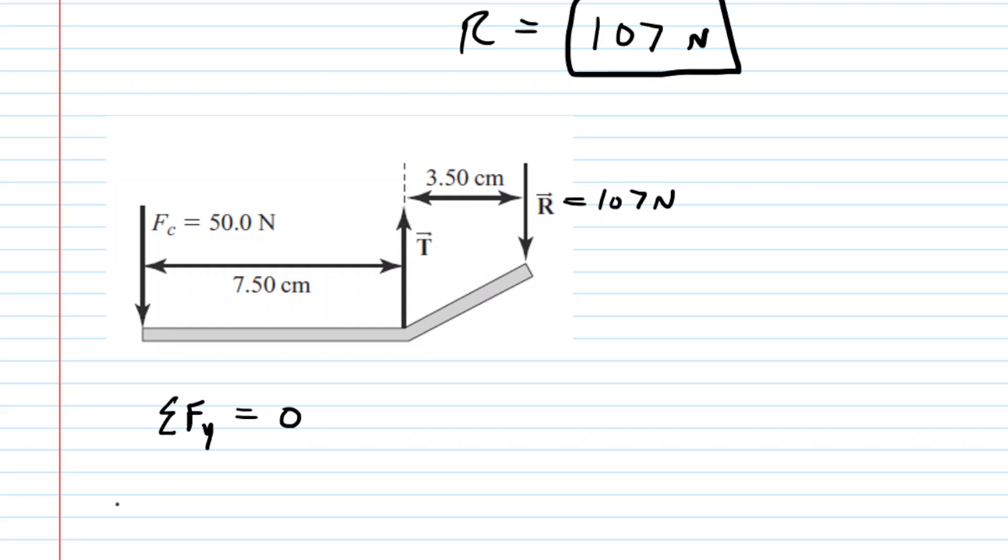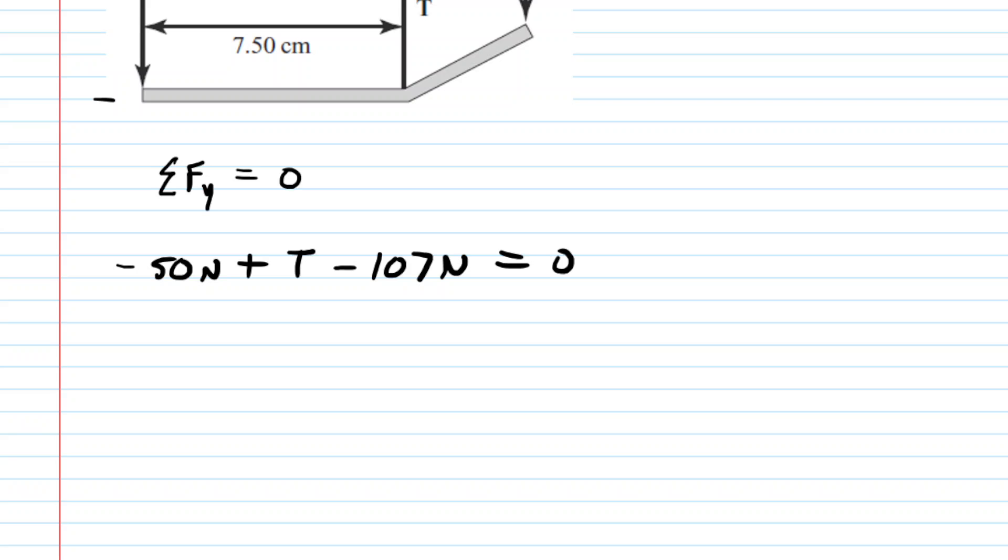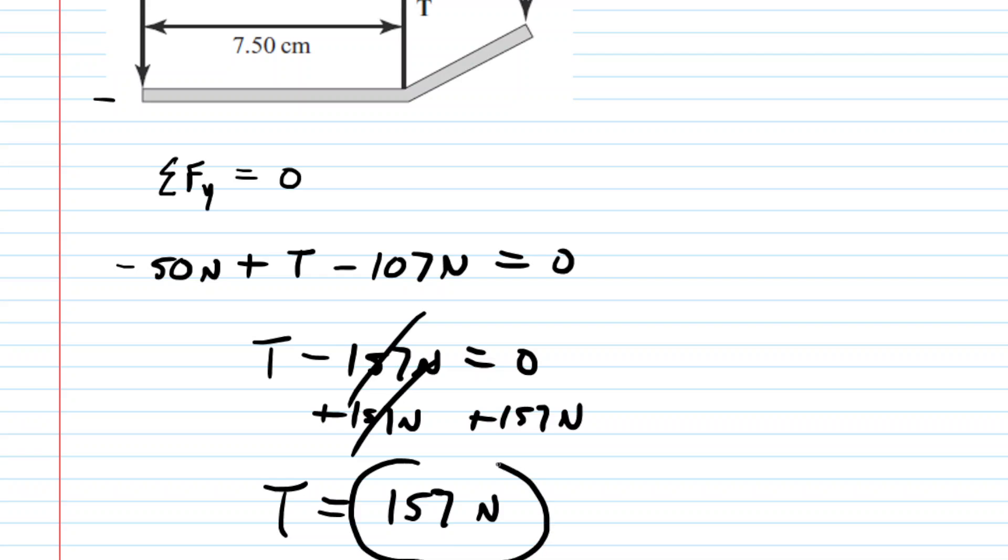F_c is negative. So you would have negative 50 newtons. We say it's negative because it's pointing down. Plus the force that we have labeled T. That's positive because it's pointing up. And then the R force is negative because it's pointing down. So we'll subtract 107 newtons. Pretty easy now to solve for T. You can take negative 50 and just subtract the 107 to get negative 157. And then if you add 157 newtons to both sides, you're going to easily be able to calculate that T force. So T is equal to 157 newtons. And that is the correct answer for that force.